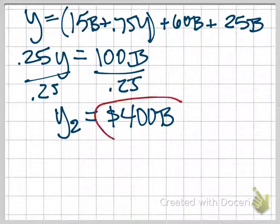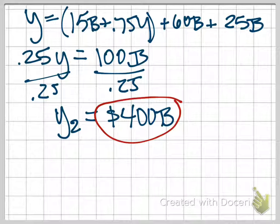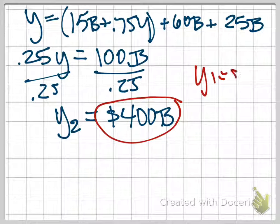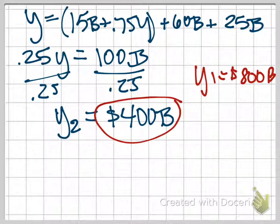That was your answer for part two. You can see here what's happening is because government purchases declined by $100 billion, this caused production to drop. Originally, Y was $800 billion, that was our Y1, and now it's only $400 billion.